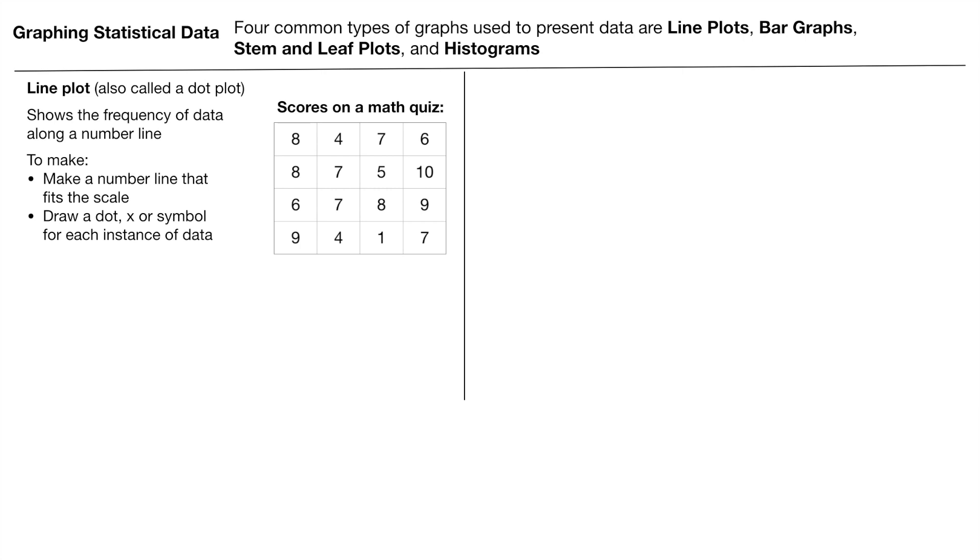I'm going to make a number line first that fits the scale. So when I say the scale, I'm looking at all the numbers that I have right here. Smallest number is 1, biggest number is 10. So my scale is going to need to have 1 through 10. So there's one right there for us.